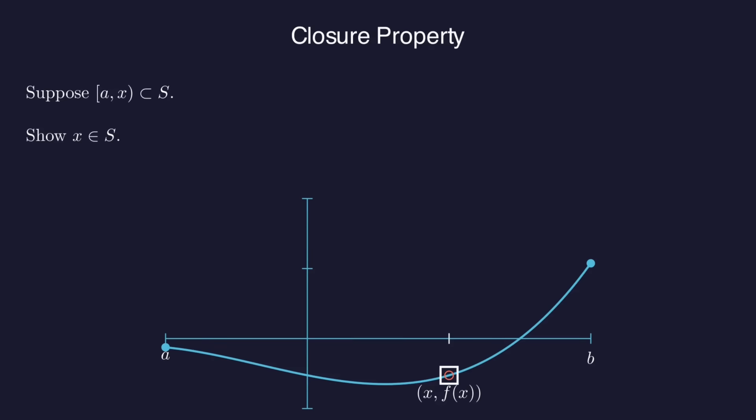If f of x is zero, then there's our root, and therefore x is in s. And if f of x is positive, we use continuity again to put an interval around x where f is positive.